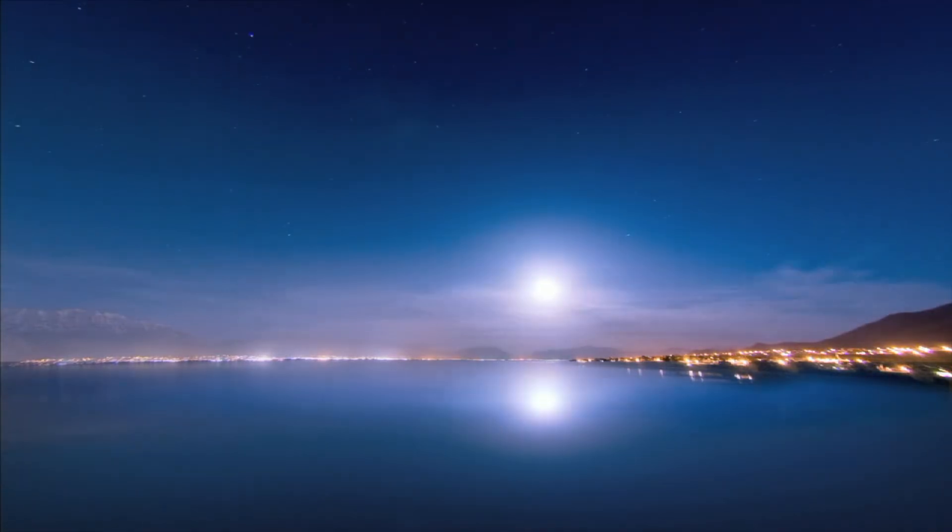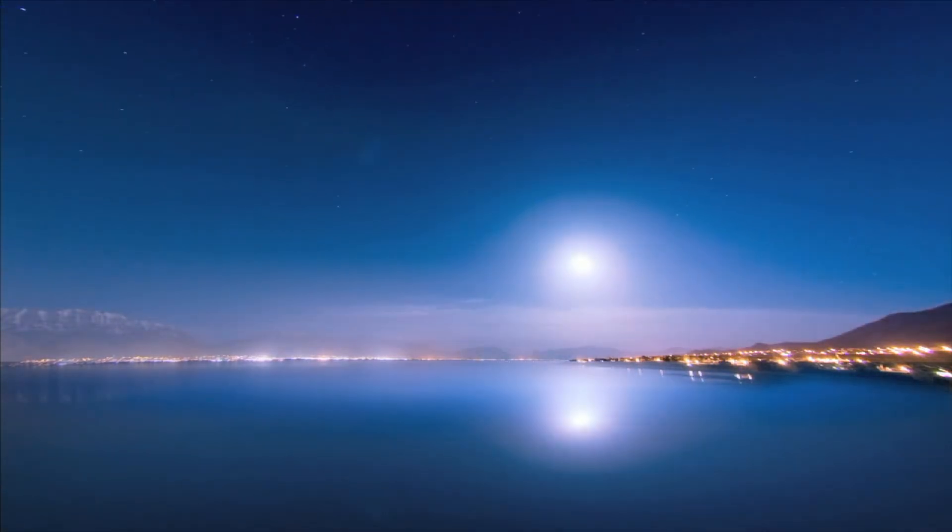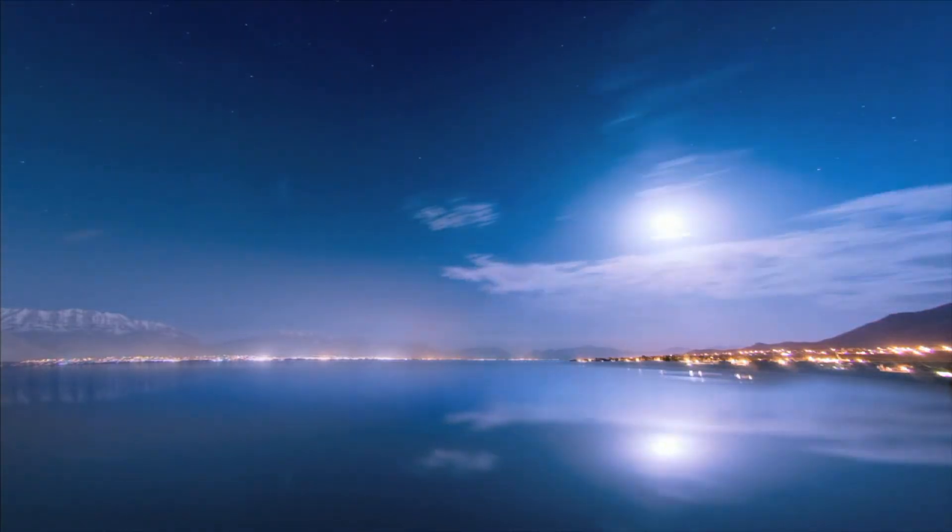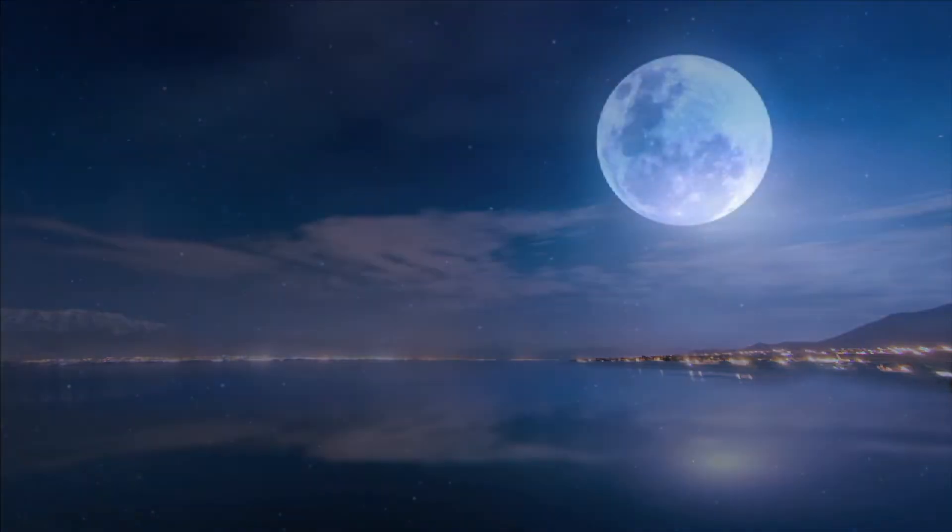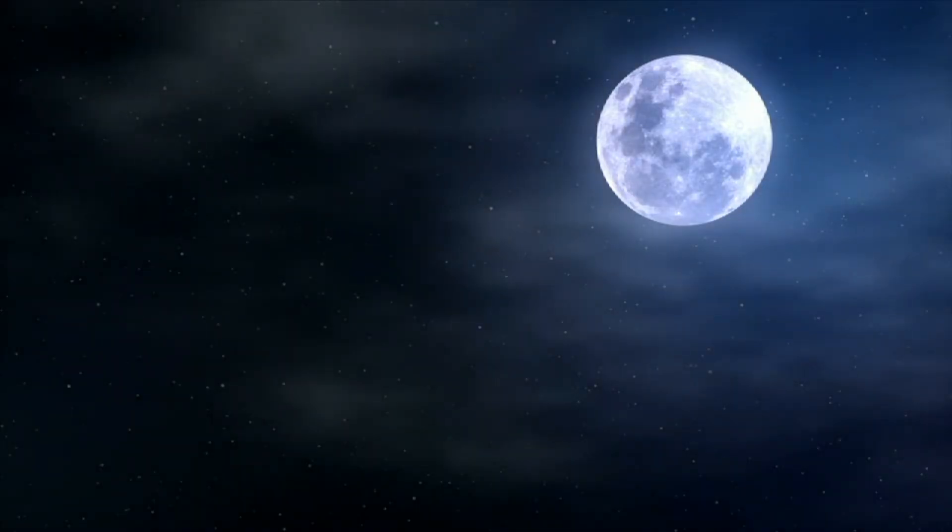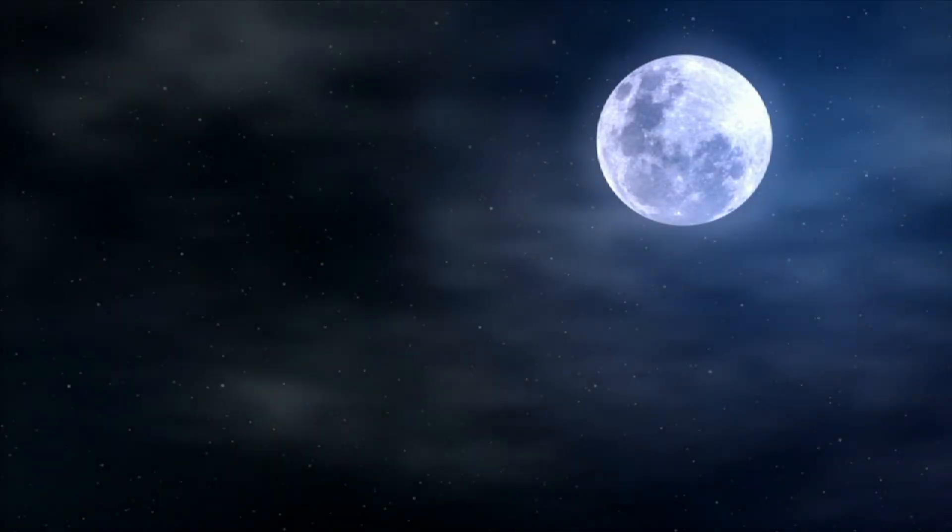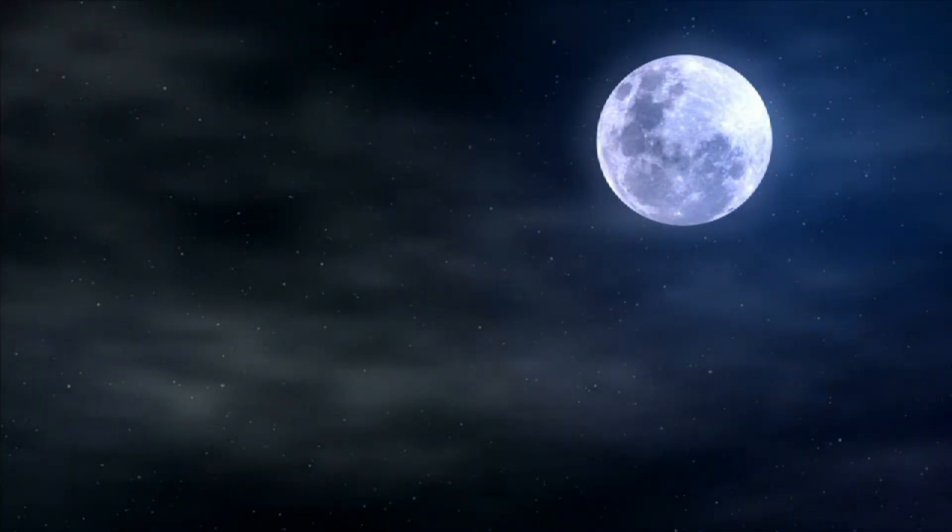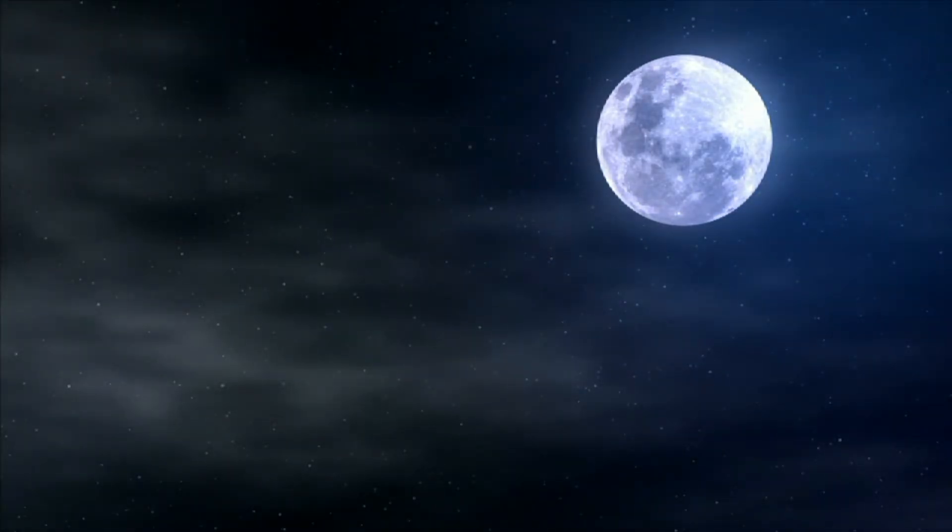The phase of the Moon is how much of the Moon appears to us on Earth to be lit up by the Sun. The Moon itself doesn't emit any light like the Sun. The Moon is only visible to us because it reflects the light of the Sun like a mirror.